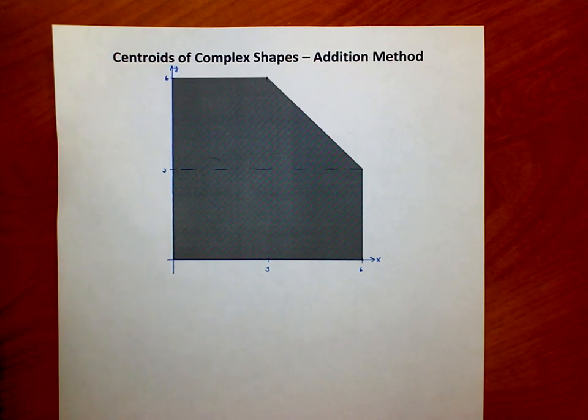Both ways are fairly simple, not a whole lot of work either way. Whenever we have a complex shape, that's not just a regular geometry shape like a rectangle or a square or triangle, it's really multiple shapes put together. Let's divide it first up into those smaller shapes.